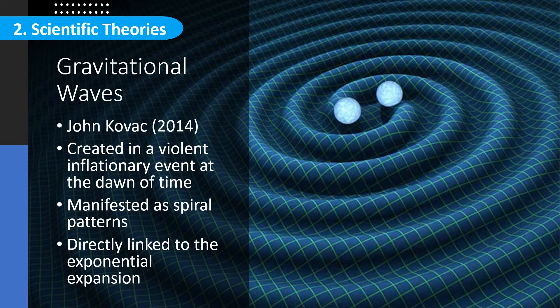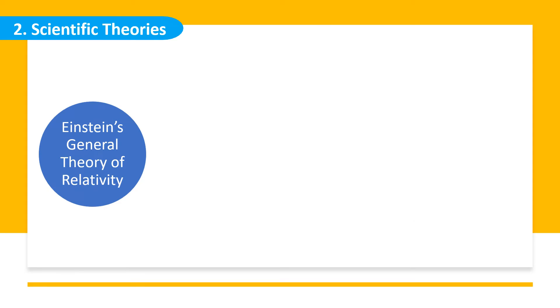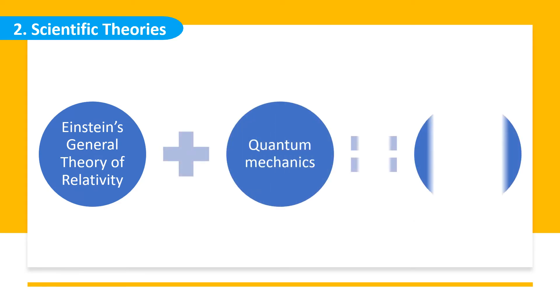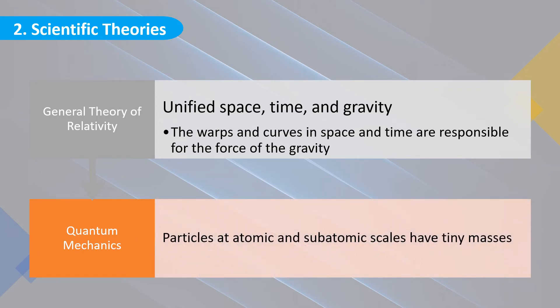However, even though there were a lot of explanations provided by the inflation theory, still a question remained: what came prior to the Big Bang? To explain this, physicists needed a new framework that would provide a cohesion for Einstein's general theory of relativity and quantum mechanics. In the general theory of relativity, Einstein successfully provided an explanation that unified space, time, and gravity. The warps and curves in space and time are responsible for the force of gravity. In quantum mechanics, however, the particles at atomic and subatomic scales have tiny masses that even the concept of gravity is essentially irrelevant in their interaction.